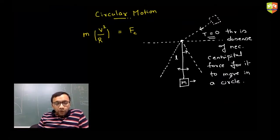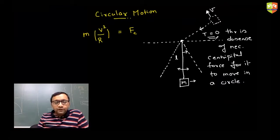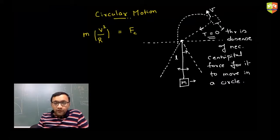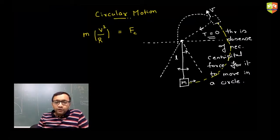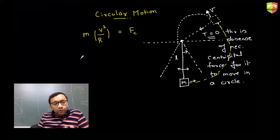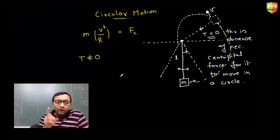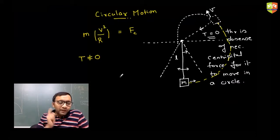If tension becomes zero at that location, the object will not move in a circle. It will instead behave as a projectile — it becomes projectile motion. So from the initial point to the point where tension becomes zero it moves in a circle, and after that it becomes projectile motion. The necessary condition for the object to complete circular motion is that tension should not become zero.